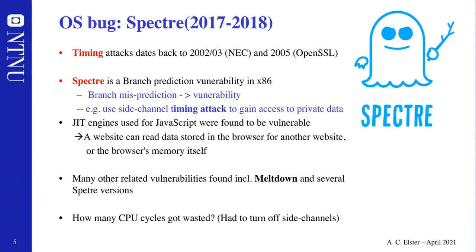The Spectre bug was a branch prediction vulnerability in x86, and AMD and ARM also suffered some aspects of it. It used a side-channel timing attack to gather access to private data — things like passwords. One thing severely implicated was data names using JavaScript, which finally made web pages vulnerable. A website could read data stored in a browser for another website and the browser memory itself.